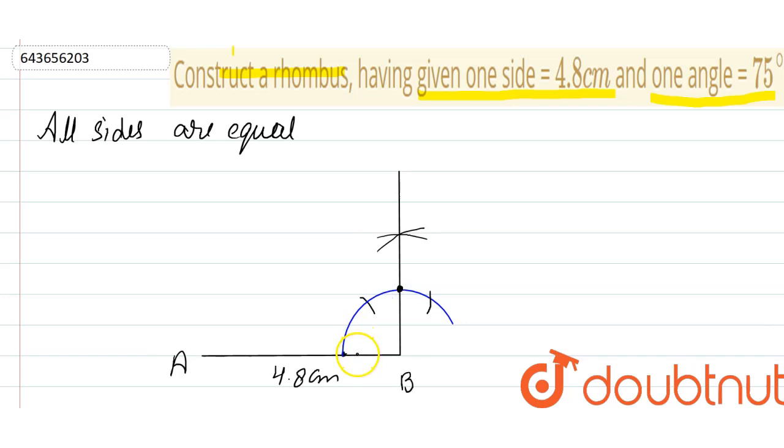This is now this point is of 90 degree from AB to this one. It is 90 degree. Now we need to construct 75 degree, so we will put our compass at this and this. So this is the point of 60 and 90, so we will bisect 60 and 90 to get an angle of 75 degree.